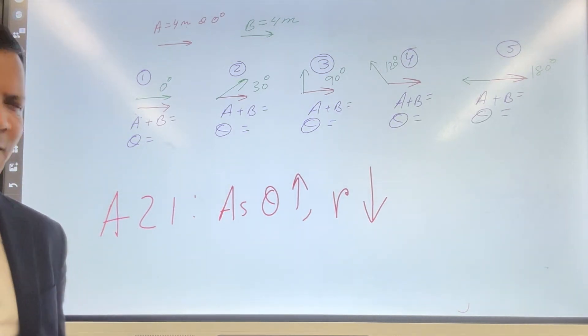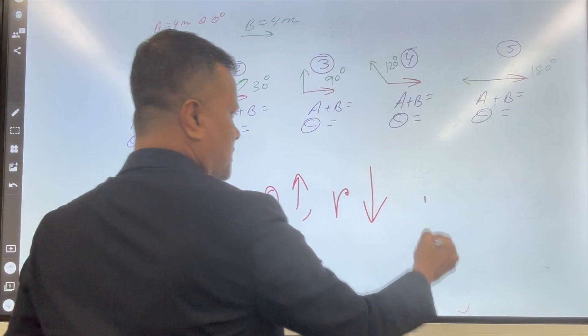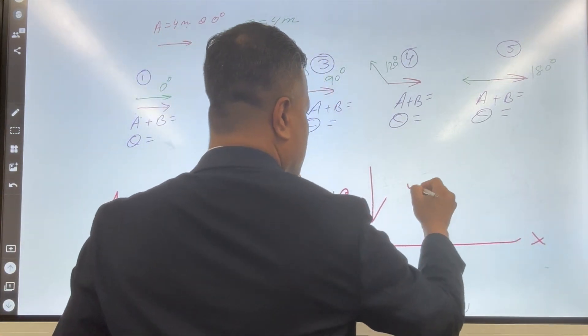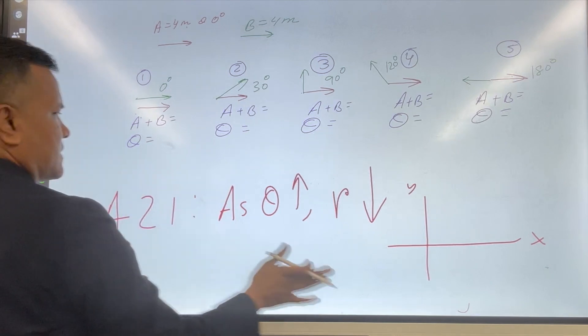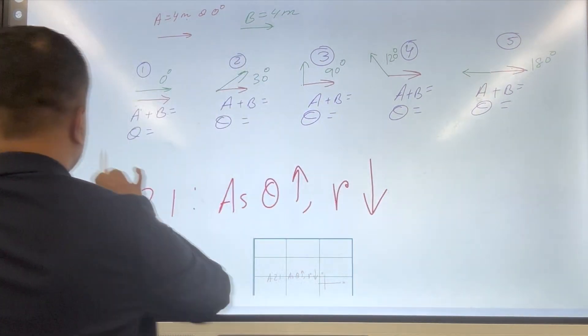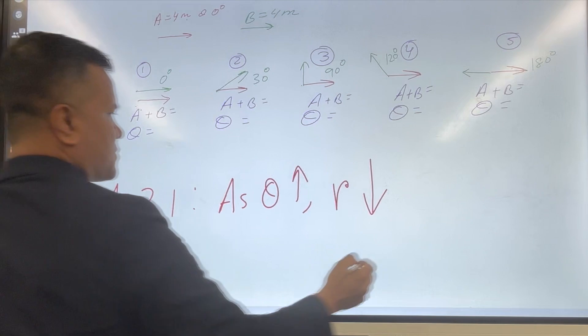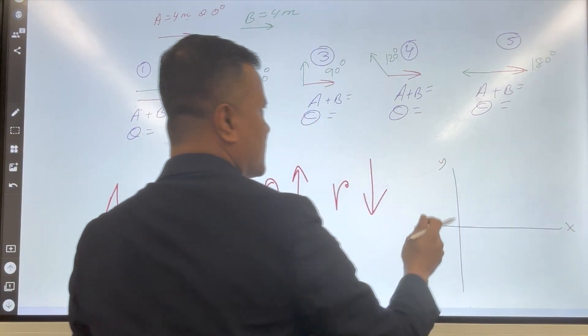Again, how do you measure vector? You measure vector from x and y axis, right? So for example, if I want to measure, let's change the color, x and y axis. How do you measure vector?